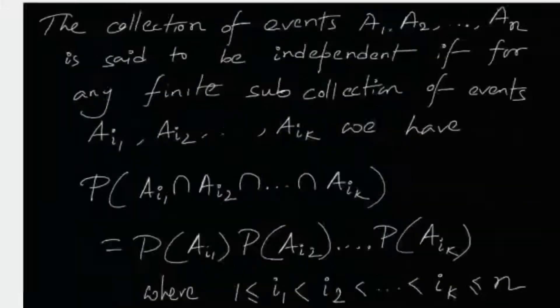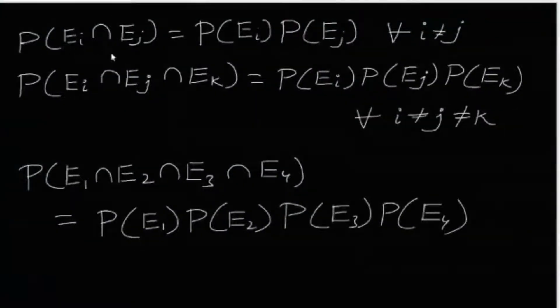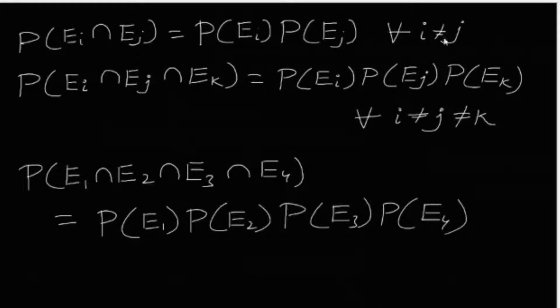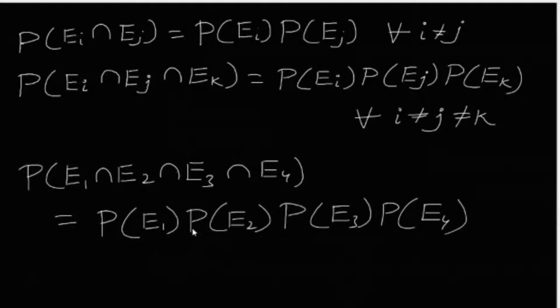Here we have four events: E1, E2, E3, and E4. So the following equalities should hold true. For any two distinct events EI and EJ, the probability of EI intersection EJ equals P(EI) times P(EJ). This must also hold for any three distinct events, and for all four events together — probability of the intersection equals the product of their individual probabilities.